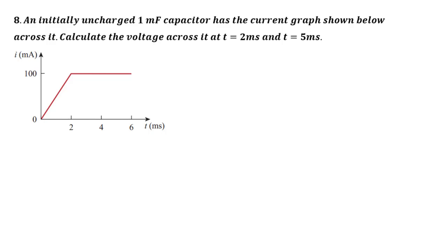Now let's move on to question number eight. We have an initially uncharged one millifarad capacitor with the current graph shown below across it. We are asked to find the voltage across it at t equals two milliseconds and at t equals five milliseconds. This is a current-time graph showing the current through the one millifarad capacitor.